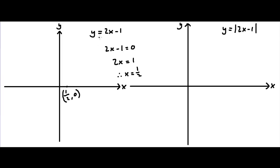Now, what happens when x is 0 in this equation? Well, y equals minus 1. So we know that the line y equals 2x minus 1 will go through the coordinate (0, -1). Now let's strike a line through these two coordinates. So the line y equals 2x minus 1 would look like this on the graph.